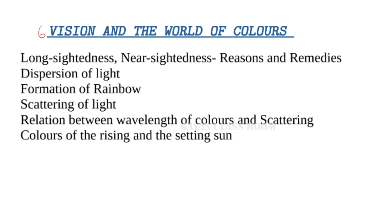After lenses, the sixth chapter is Vision and the World of Colors. Topics include long-sightedness, short-sightedness, near-sightedness, the reasons for each, and myopia.